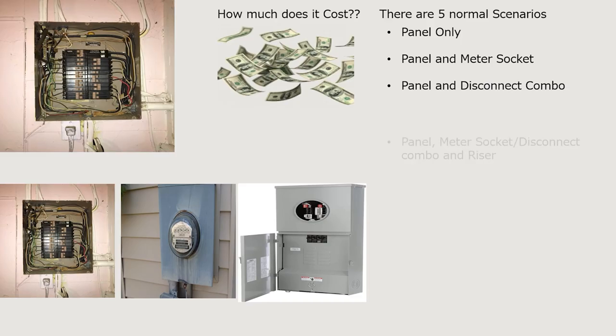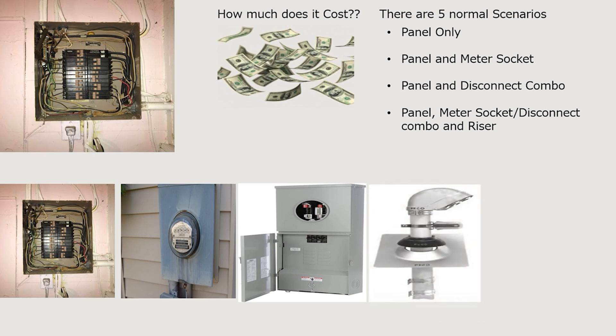Sometimes local codes or the NEC — the National Electrical Code — require it, and sometimes it's just practical to put it there. Another scenario is doing the panel, the meter socket or disconnect combo, and the riser. The riser is the piece taking the wire up to the service above. You could have an underground service, but a lot of times it goes through the air. That's why the prices I give you today have a pretty wide range — there are lots of different nuances you can run into.